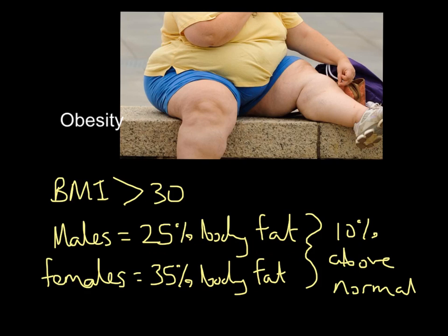Hope you found this video useful. The key things are: the difference between fat mass and fat-free mass in body composition; how to calculate BMI using the equation; the problems with using BMI - that it only looks at weight and doesn't look at exactly what you are made of; and how to define obesity accurately.